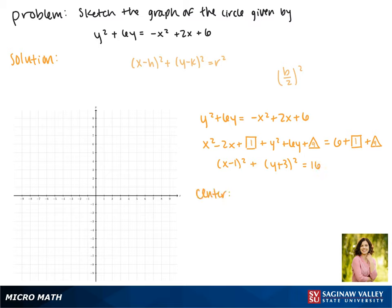So now we can find the center of our circle. The center is at the point h, k, which for our circle is the point 1, negative 3.